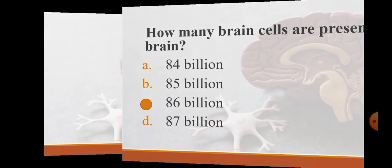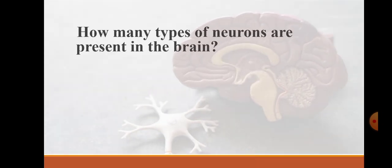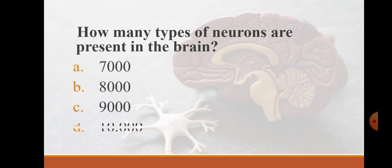How many types of neurons are present in brain? 7000, 8000, 9000, 10,000. The correct answer is 10,000 types of neurons are present in brain. Three main types of neurons are sensory neurons, motor neurons, and interneurons. All three have different functions.